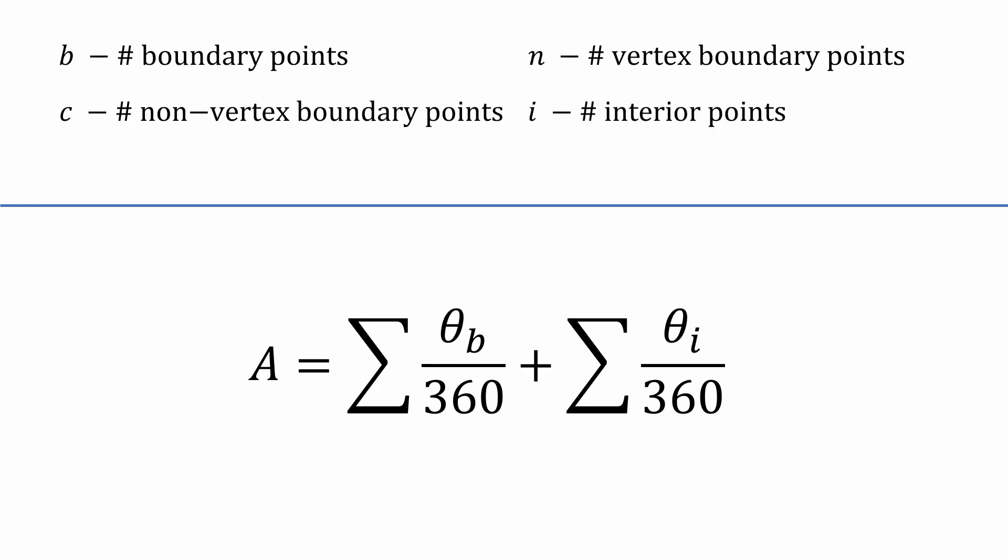There's an important relationship we'll need to use, so let's write it down now. Since the vertex points and the non-vertex points add up to the total boundary points, we can write n plus c equals b. Solving for c, we get c equals b minus n. And just for good measure, I'm going to put our angle definitions here as well.